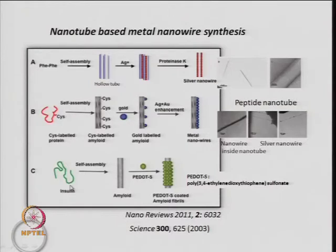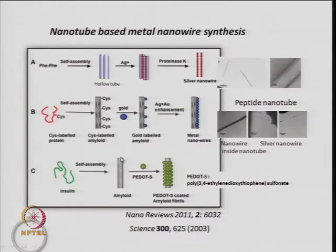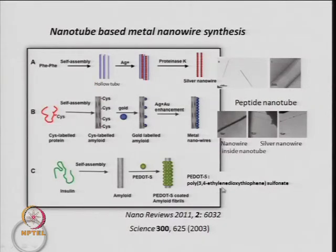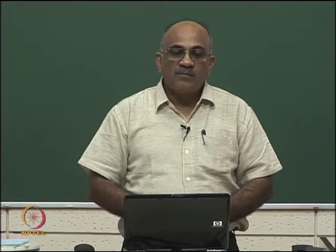A third biopolymer-based example uses insulin, which self-assembles into amyloid tubes. Cysteine-labelled amyloid is coated with the conducting polymer PEDOT:S (poly 3,4-ethylenedioxythiophene sulfonate), which attaches to the amyloid and forms conductive chains. There are several biopolymer-based methods by which metal nanowires can be obtained.